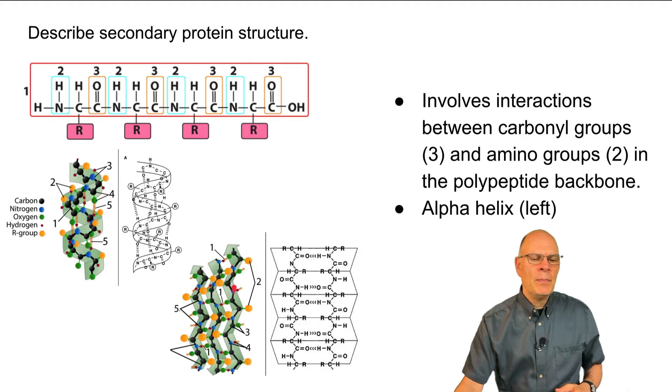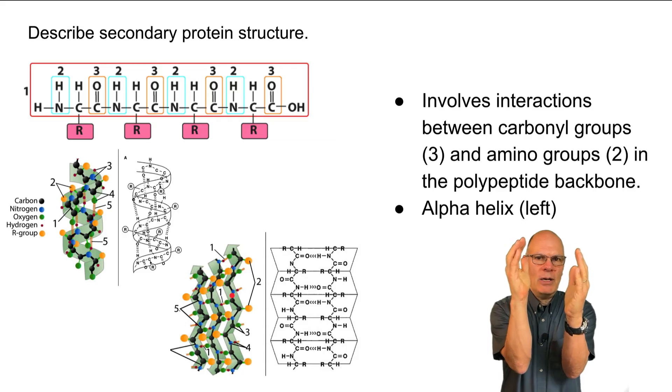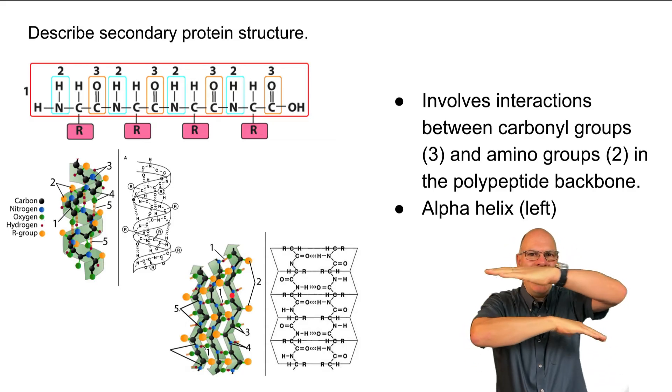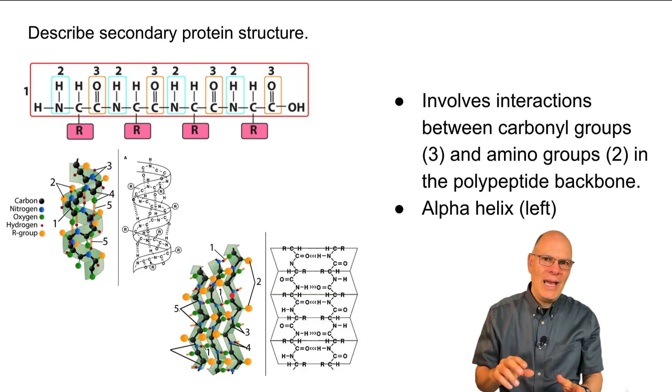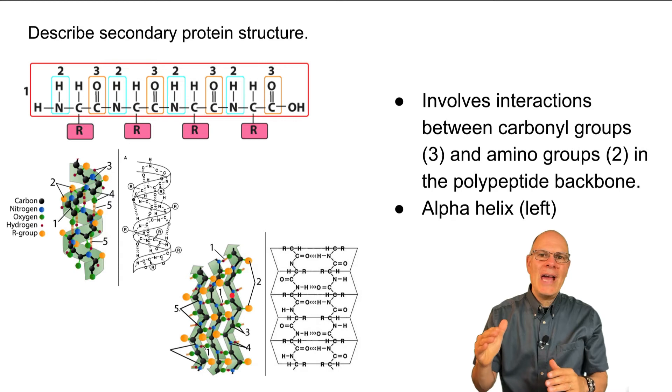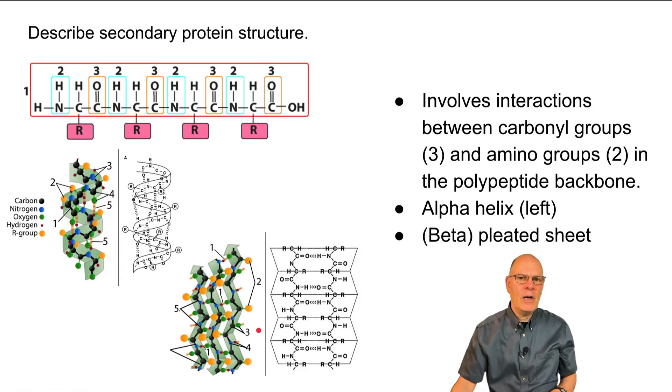Now, the other thing that happens is if the parts of the polypeptide chain are either parallel to one another like this or anti-parallel to one another like this, then carbonyl and amino groups can again interact and form hydrogen bonds and that can lead to a form called a pleated sheet. And that's what we see over here.